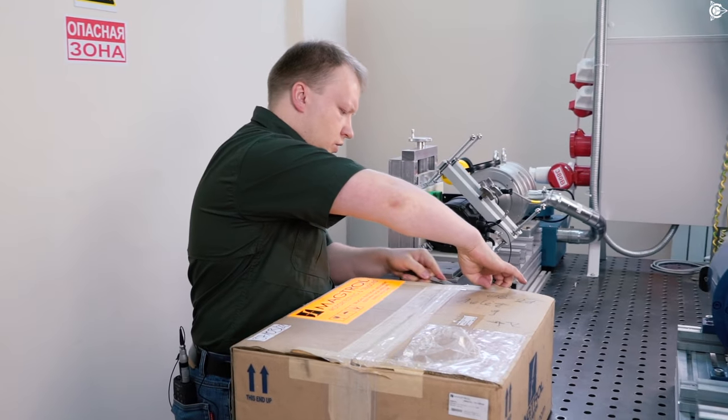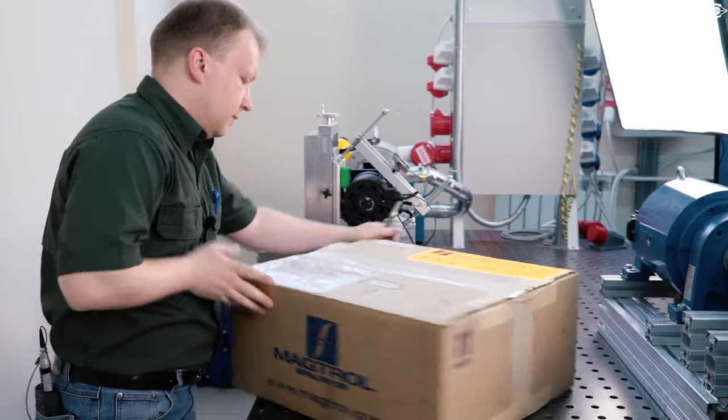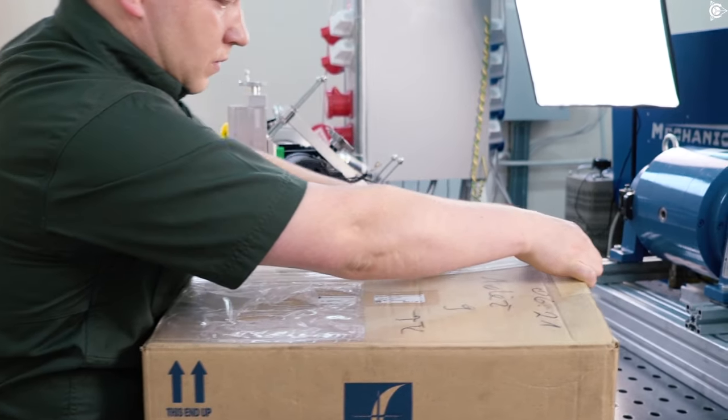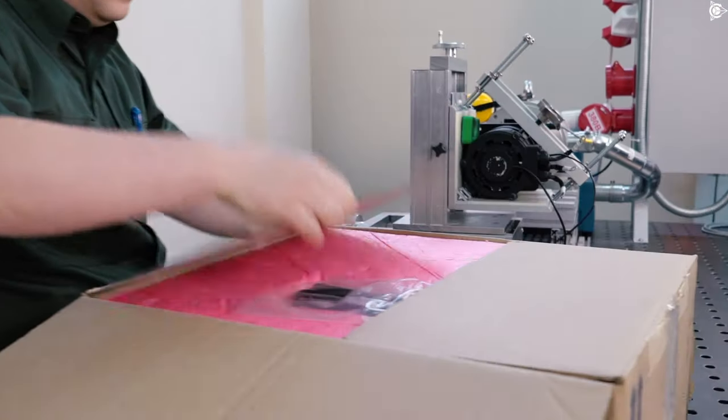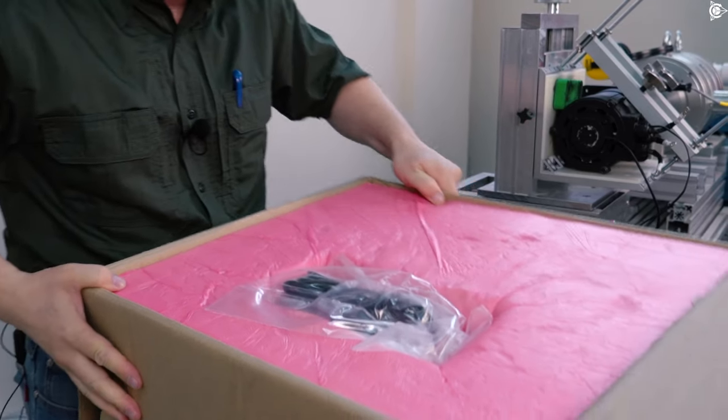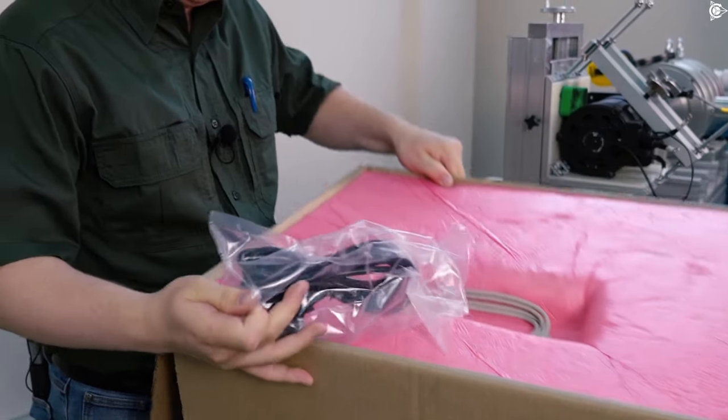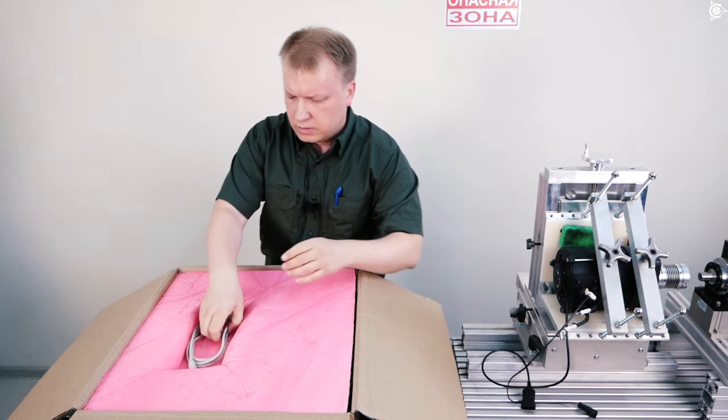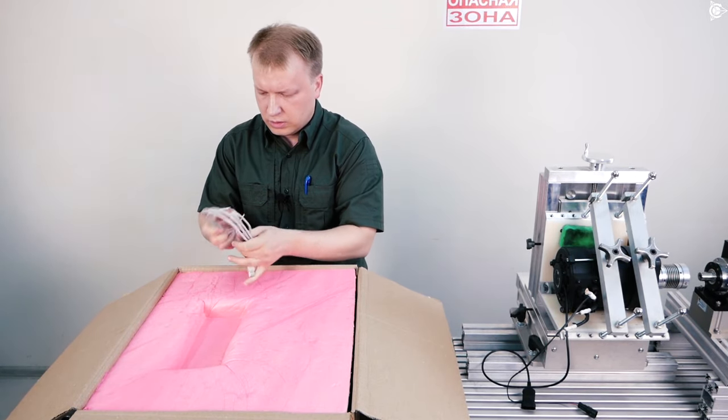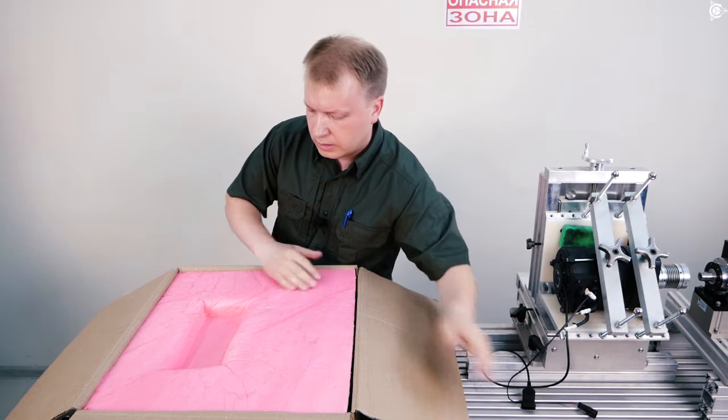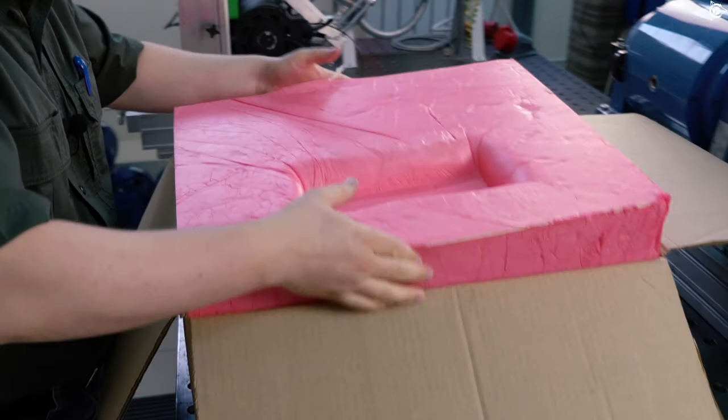Now we're opening the box. Looking at what we have here. The power supply cable. USB cable. We're checking that all plug connections are okay and continue to unpack.